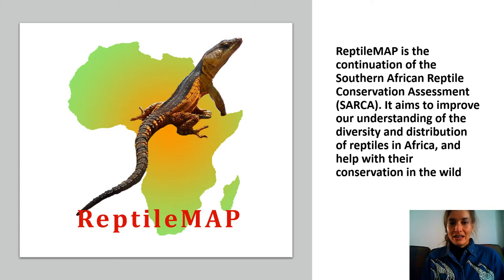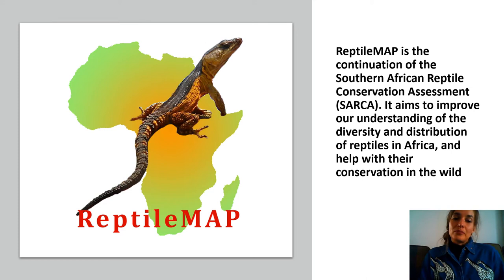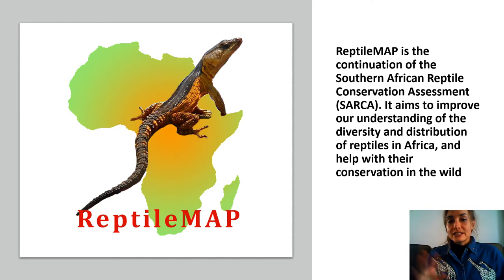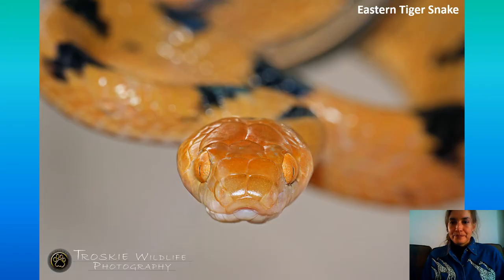Then there's Reptile Map, the Atlas of African Reptiles. It's the continuation of the Southern African Reptile Conservation Assessment, but now we're also covering the whole of Africa. This project is helping us to understand distribution patterns of reptiles, and thereby we can more effectively conserve these many amazing animals. The data from this project has been used to publish the official red list of the reptiles of Southern Africa. Here's an awesome example of one of my personal favorites, an Eastern tiger snake, photographed by Eugene Trosky and uploaded to Reptile Map.